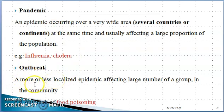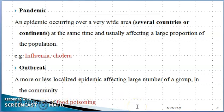Outbreak is a more or less localized epidemic affecting a large number of people or groups in a community. For example, food poisoning: if many people who were at a particular restaurant or a particular place all got food poisoning at the same time, and this was not present before but suddenly came — we call that an outbreak, a particular epidemic in a specific community.